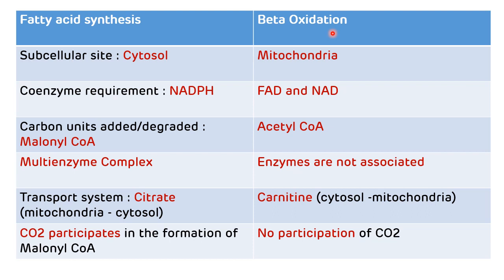In beta-oxidation, the chain is shortened by sequential removal of two-carbon units as acetyl-CoA. A fourth major difference is the enzyme system: in fatty acid synthesis, enzymes exist as a multi-enzyme complex called the fatty acid synthase complex, while in beta-oxidation enzymes are not associated with each other. Regarding transport, fatty acid synthesis uses citrate to transport acetyl-CoA from mitochondria to cytosol, while beta-oxidation uses carnitine. Also, CO2 participates in malonyl-CoA formation in synthesis but not in beta-oxidation.